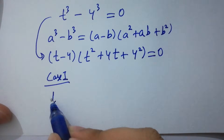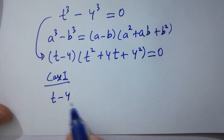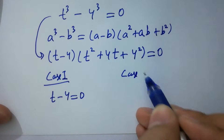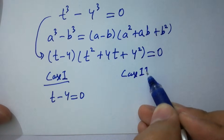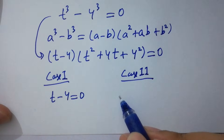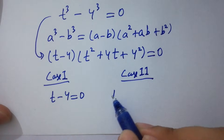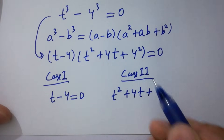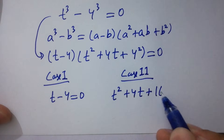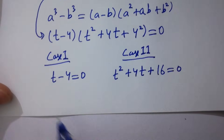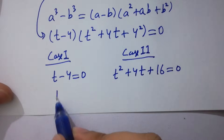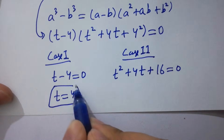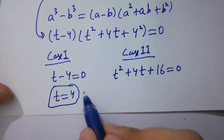Case 1 is t minus 4 equals 0, which gives us t equals 4, our real solution. Case 2 is t squared plus 4t plus 16 equals 0, a quadratic equation.